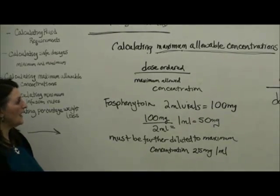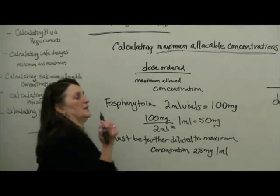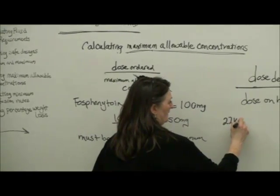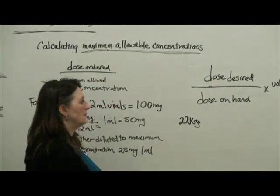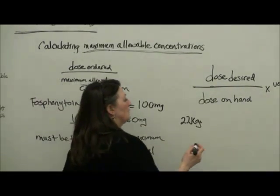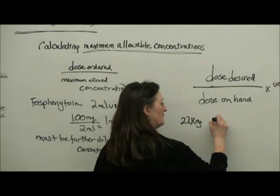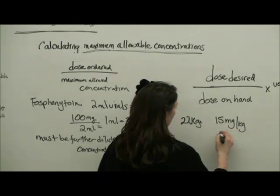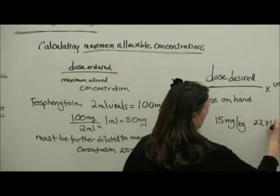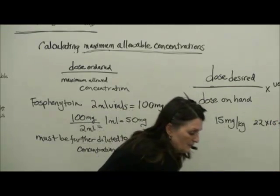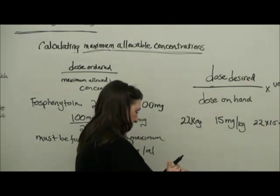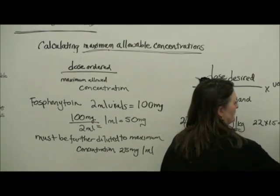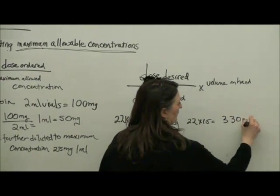Okay, so we have a patient who is 22 kilos, and they want to load this patient, bring up the serum level. We're going to load this patient with 15 milligrams per kilo. So 22 times 15, the ordered dose that the physician is going to give us is 330 milligrams is our ordered dose.